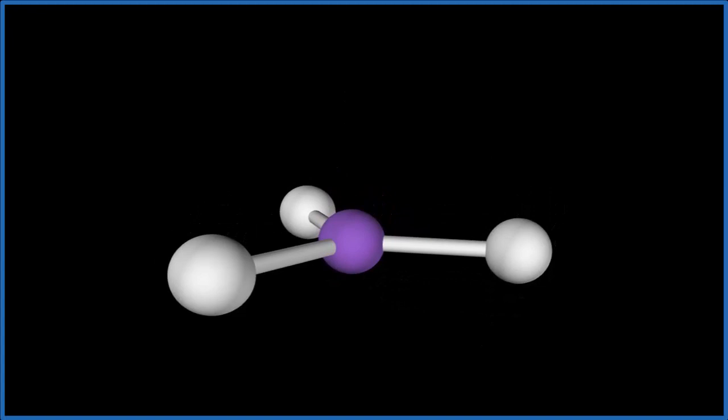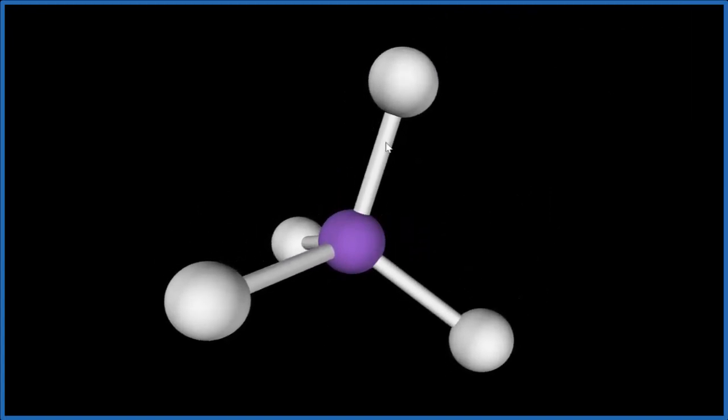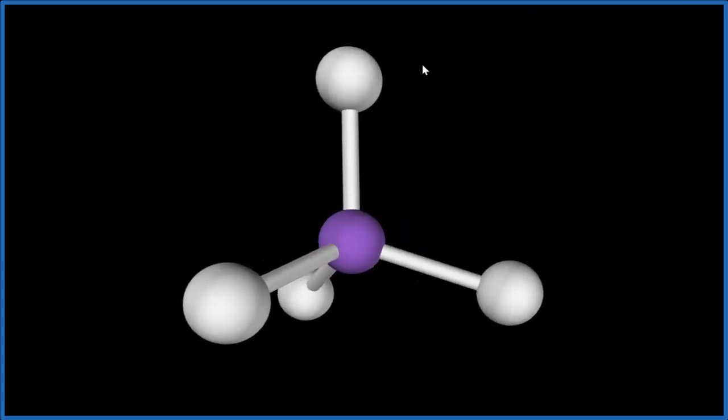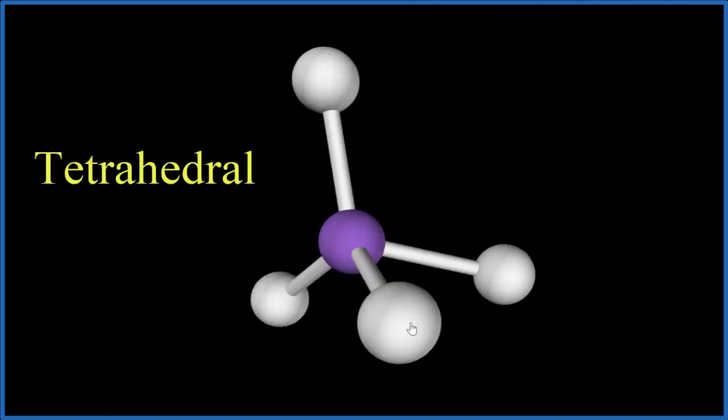We put the last one on. This will be our fluorine, and you see that pushes them down. Everything spreads out. So that gives us the molecular geometry of tetrahedral for CH3F.